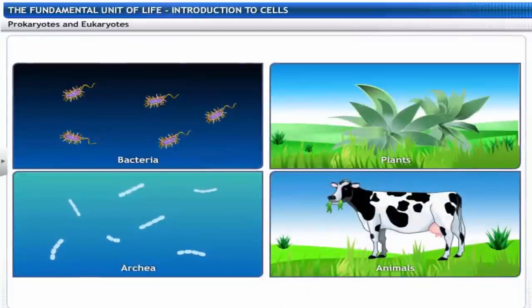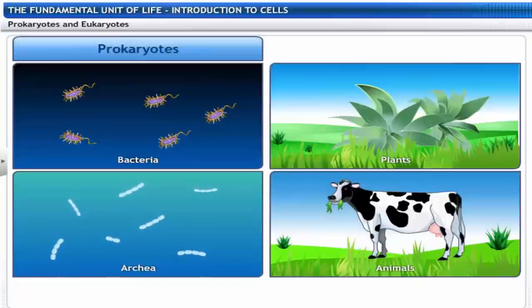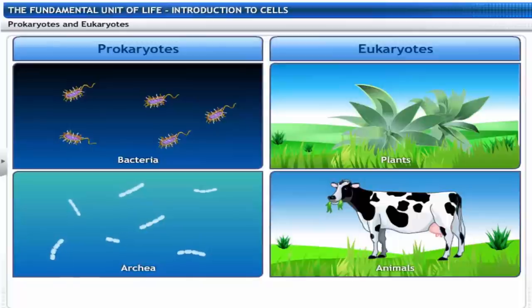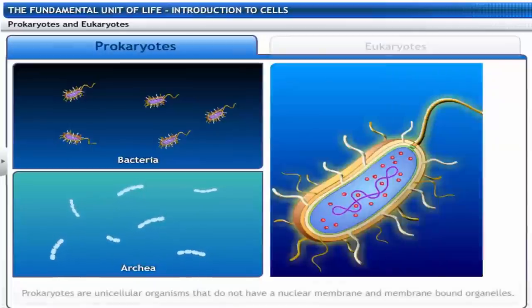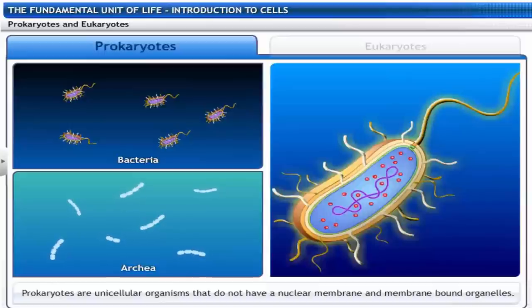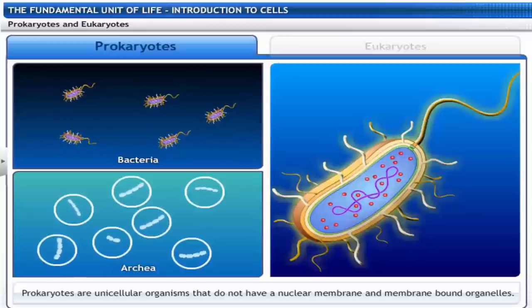Living organisms are also classified as prokaryotes and eukaryotes based on the organization of cellular structure. Prokaryotes are unicellular organisms that do not have a nuclear membrane and membrane-bound organelles. For example, bacteria and archaea.